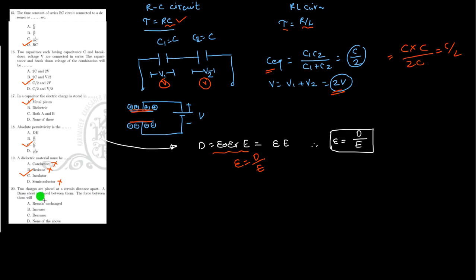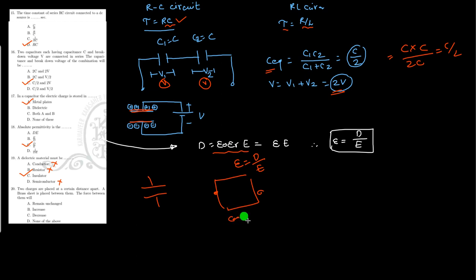When two charges are placed at a certain distance apart and a brass sheet is placed between them, what will be the force between them? Brass is a conducting material, so it acts like a short circuit between the two charge bodies, and the force between them decreases. Hope you understood these 20 MCQs clearly. In the next video, we will discuss another MCQ based on theoretical concepts. Thank you.